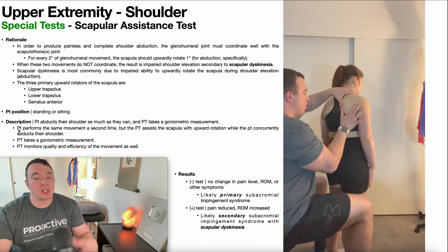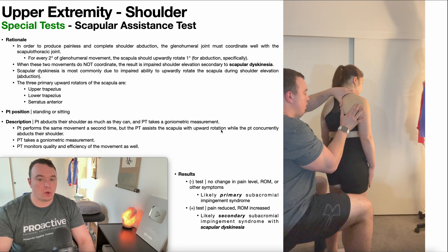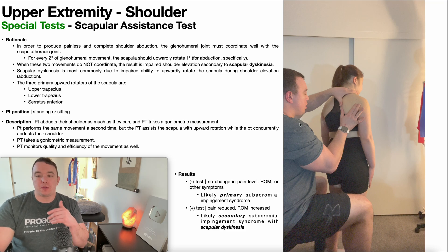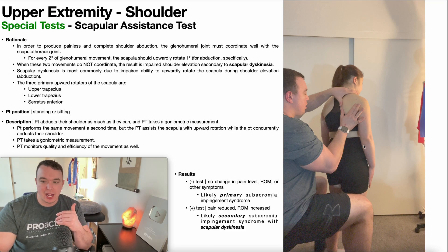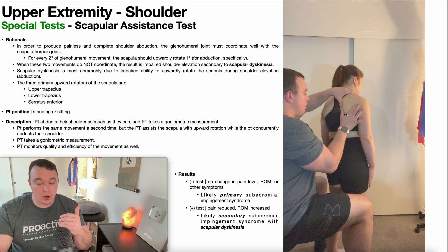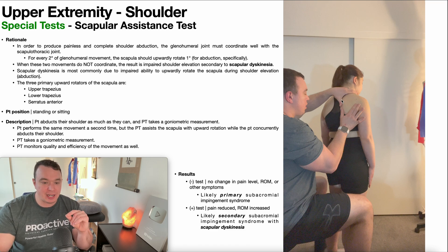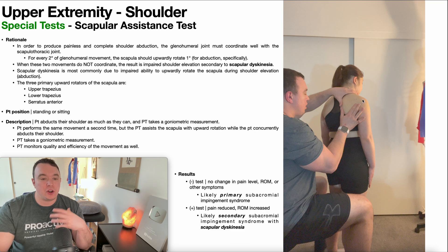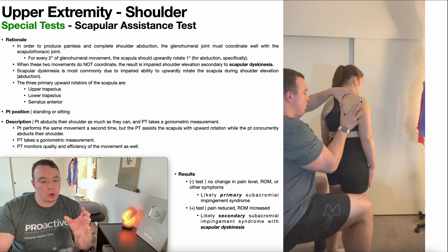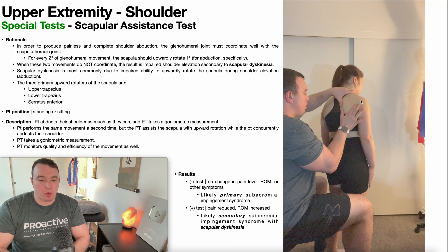For the second part of this test, the patient will again perform active shoulder abduction. However, the PT will assist the scapula passively with upward rotation while they concurrently abduct their shoulder. Get a good grip on the scapula while the arm is down by the side — the two parts easiest to control are the inferior border, which you move in this direction, and the superior border or the medial portion of the spine of the scapula, which you move down. Overall that creates an upward rotation movement, and you do that while they abduct, approximating the 2:1 glenohumeral-to-scapular rotation ratio.